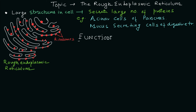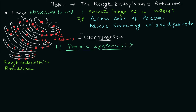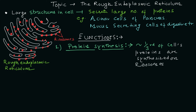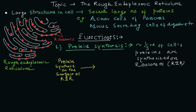So this is the organelle — rough endoplasmic reticulum — it has a lot of ribosomes. Function number one is protein synthesis, which we have already discussed. Protein synthesis is the major function of the rough endoplasmic reticulum. One third of the cell's proteins are synthesized on the ribosomes present on the surface of the rough endoplasmic reticulum. Protein synthesis happens on the surface of the RER, and then proteins move from the surface to the lumen. This process — the transfer of protein from the surface into the lumen — is known as co-translational translocation.